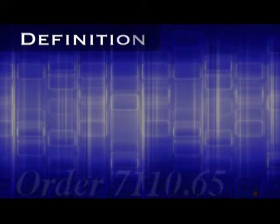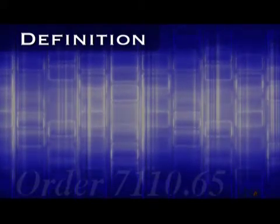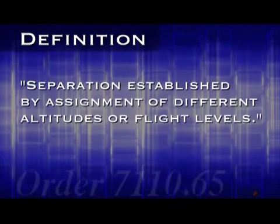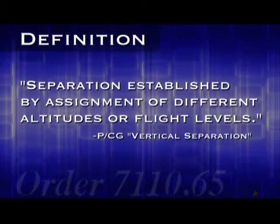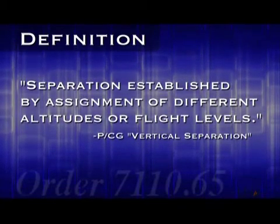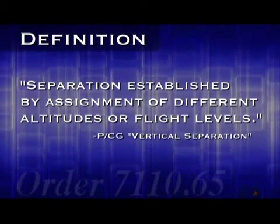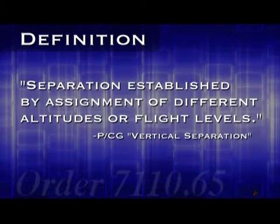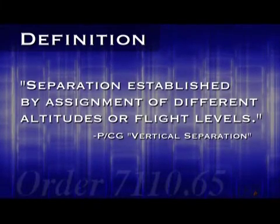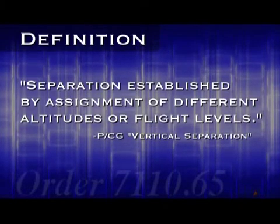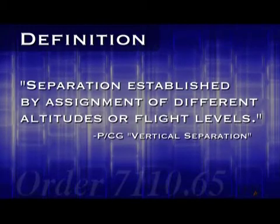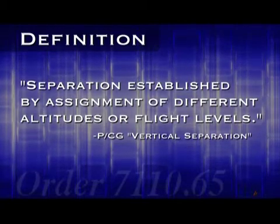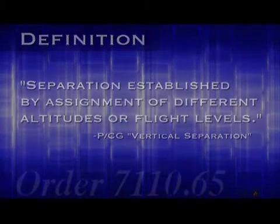The Pilot Controller Glossary defines vertical separation simply as separation established by assignment of different altitudes or flight levels. It sounds pretty simple, but as we'll see later, this is a tricky concept. There are a number of rules that go along with using this kind of separation, which are laid out in the 7110.65 in Chapter 5, Section 5.